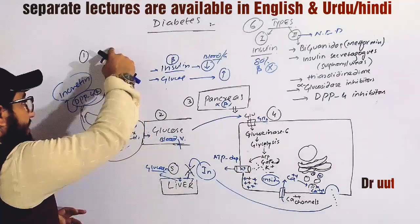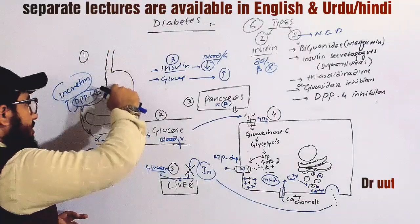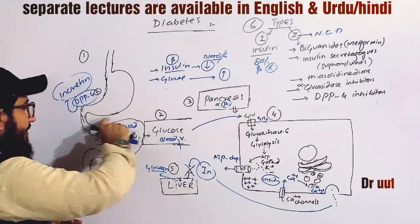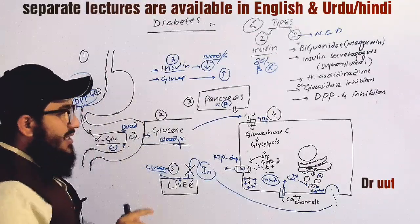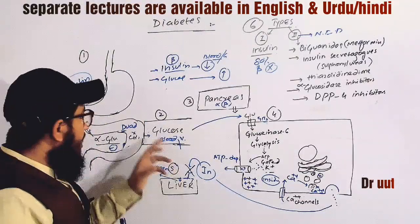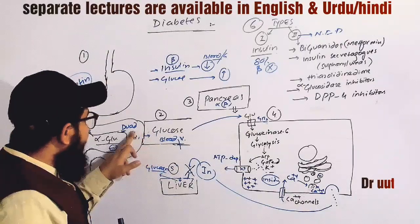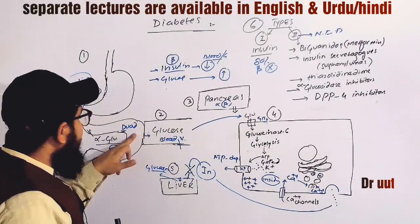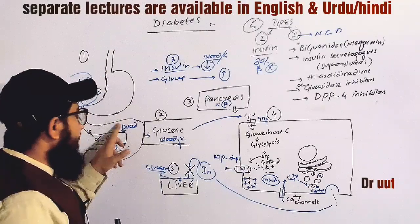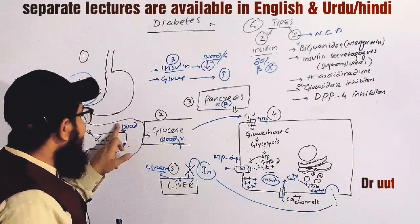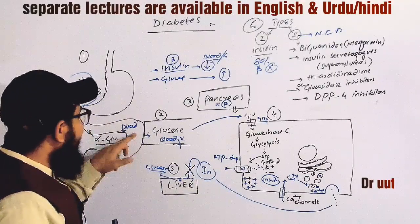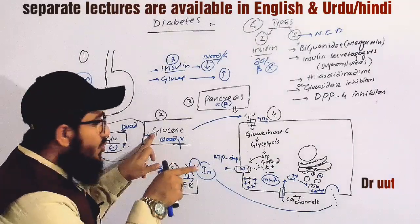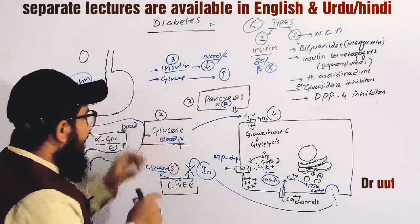As you take glucose and carbohydrates, they come into the first part of the small intestine, the duodenum, where the brush borders are present. Those brush borders perform the metabolism of carbohydrates and convert them into glucose, which is then sent to the blood vessel.